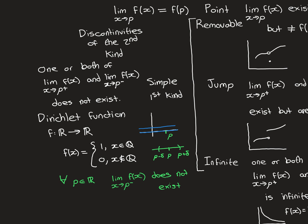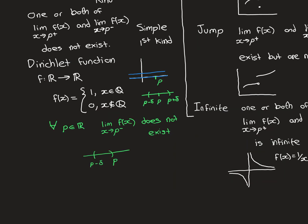You can't get and stay indefinitely close to anything. This claim needs justification: how do we know this interval always contains both rationals and irrationals? We consider the interval from p minus delta to p and explain why it always contains a rational. You can always find a rational below the lower boundary and above the upper boundary — this follows from the Archimedean property, since integers are rationals.